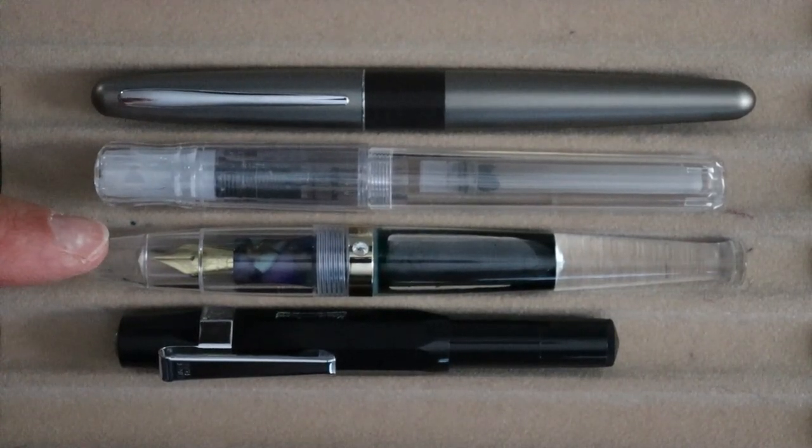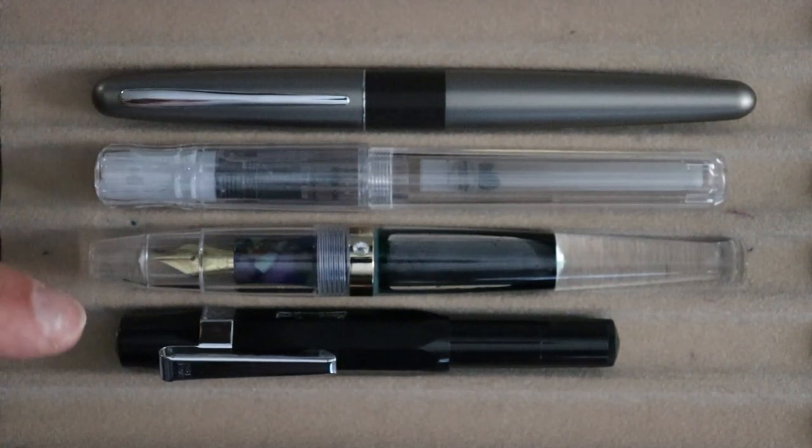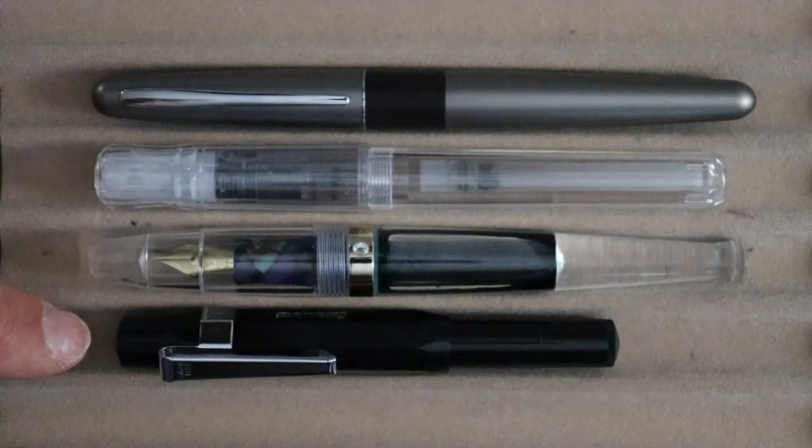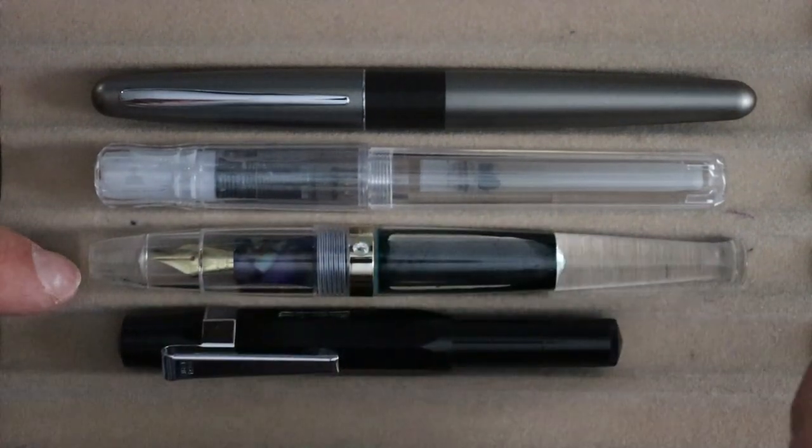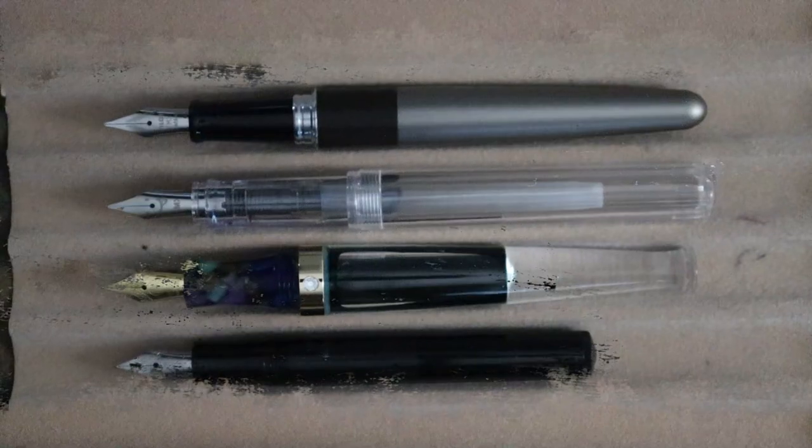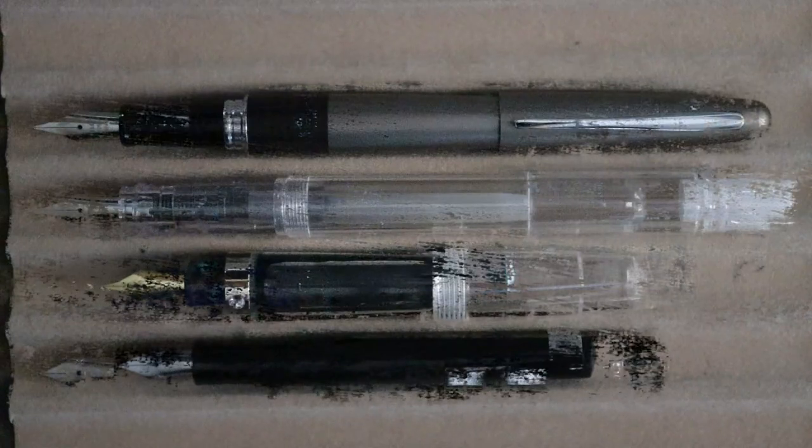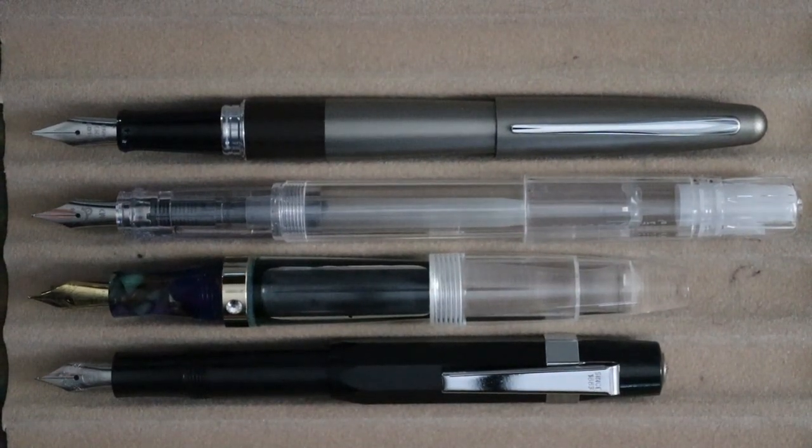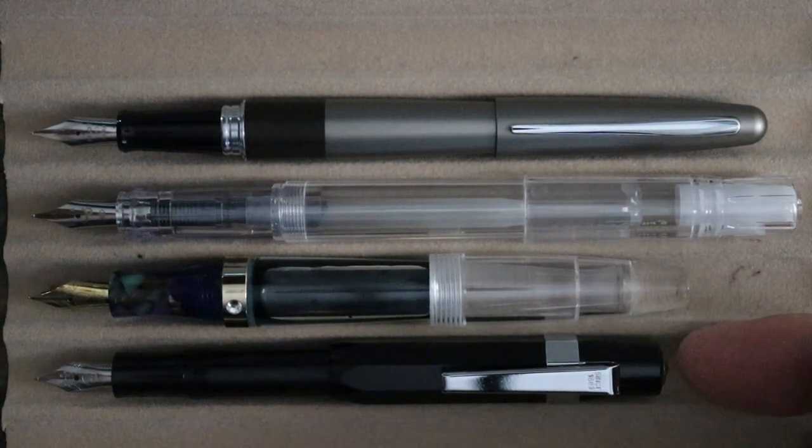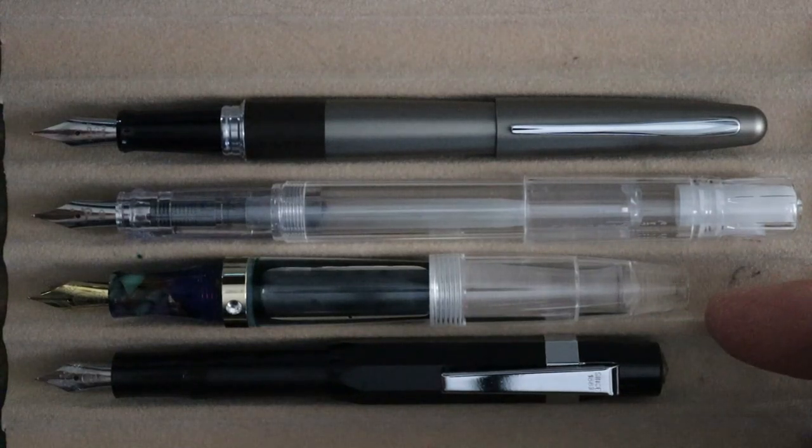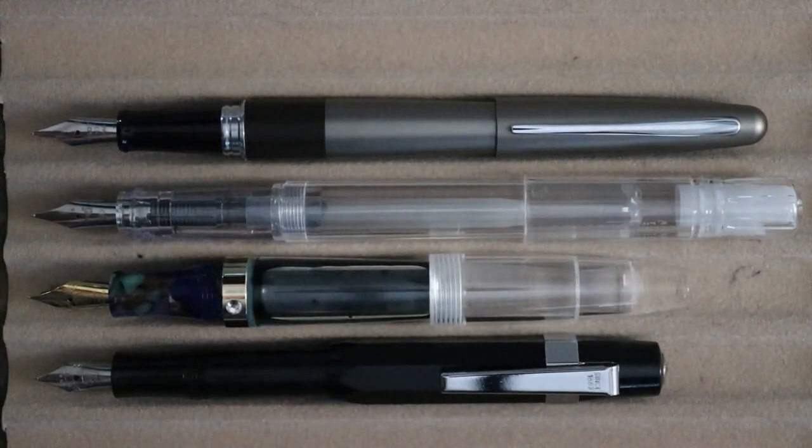All right, here you have the Mahjong S5, you have a Pilot Kakuno, you have a Pilot Metro, and then you have a Kaweco Sport, which is a true pocket pen. So really this would be a long pocket pen. And here they are uncapped. And posted, you know, posted you can see here's the end of the S5 right here and then the Kaweco Sport, so pretty similar that way. But the others are obviously a little bit longer.